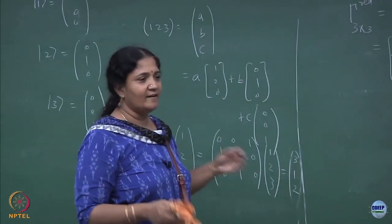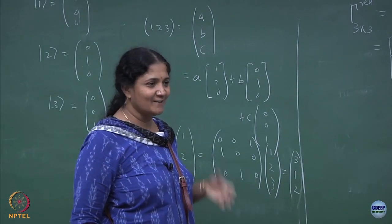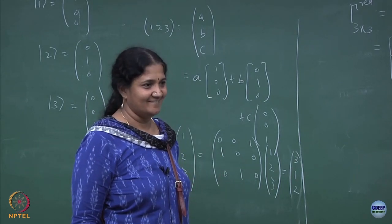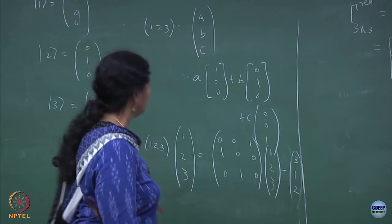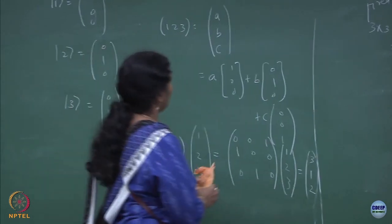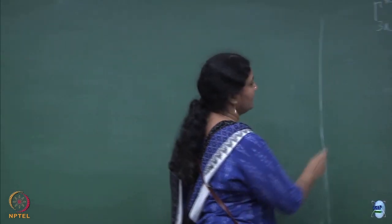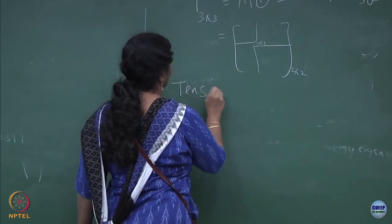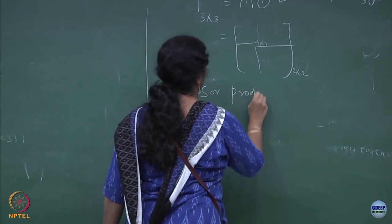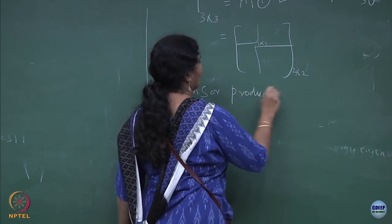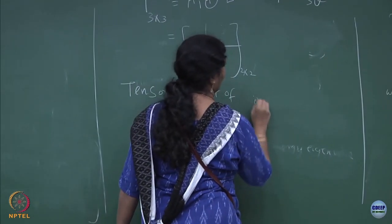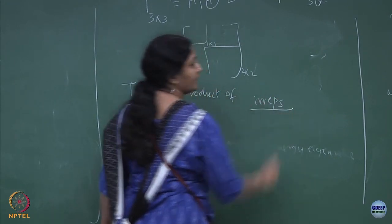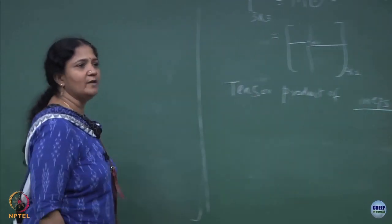You can have 100×100 or 1000×1000 matrices. How do you construct it? That is a good question. So that is going to be just a tensor product of irreps.